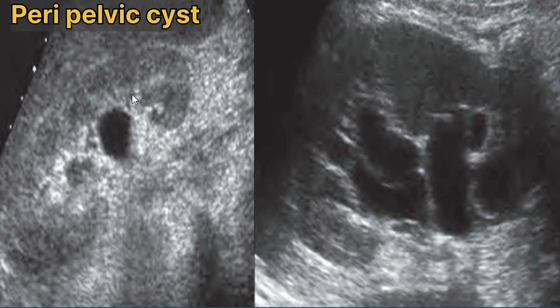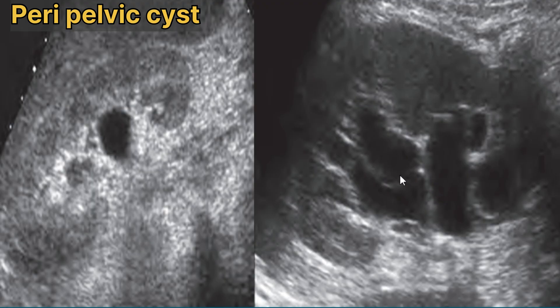Now we will discuss peripelvic cysts. These cysts are mostly formed in the renal sinus and are probably lymphatic in origin. They are frequently multiple and may be bilateral, and are important primarily because they can be confused with hydronephrosis. A single cyst located within the renal sinus can simulate hydronephrosis. Multiple peripelvic cysts, some with a rounded configuration extending into the renal hilum, can also be confused with hydronephrosis.